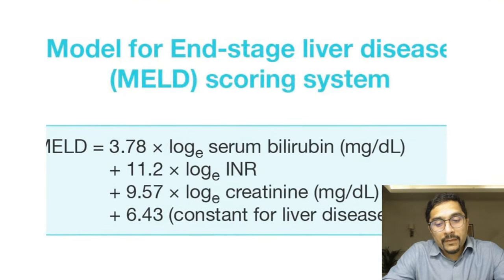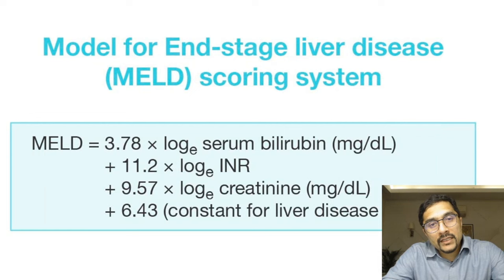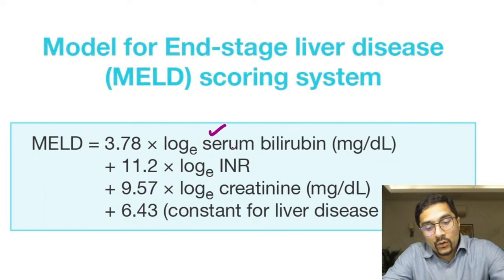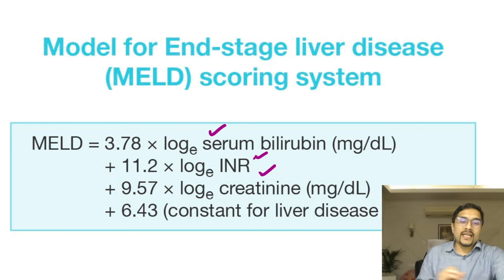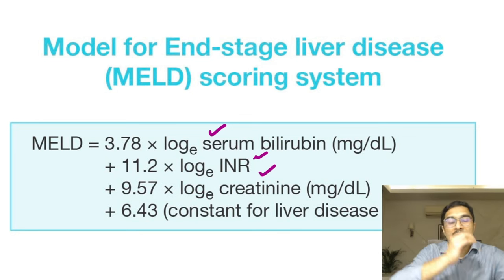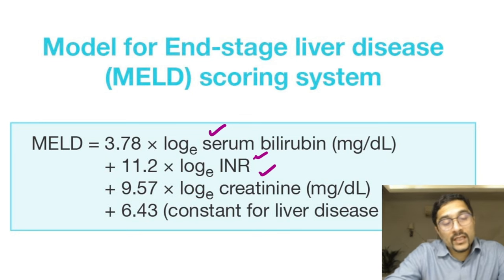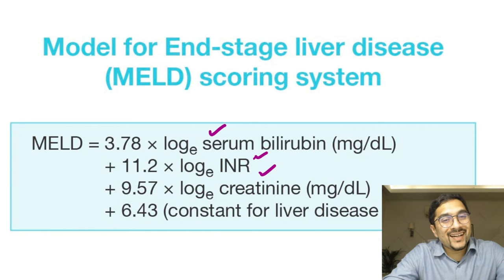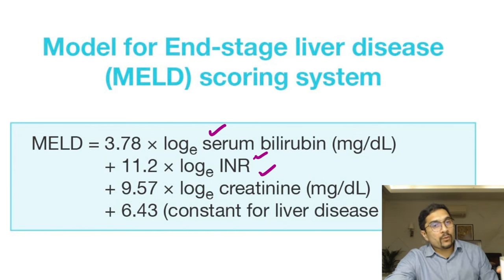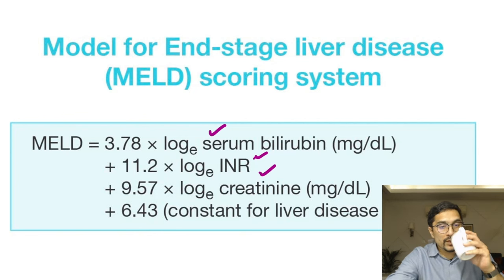The MELD score includes serum bilirubin, INR, and creatinine. For those preparing for the INICET exam, both the Child-Pugh score and the MELD score are frequently asked and must be memorized.